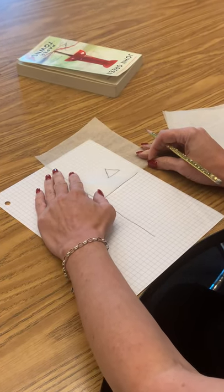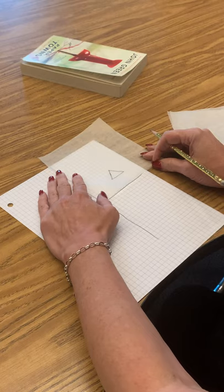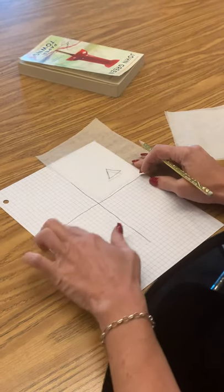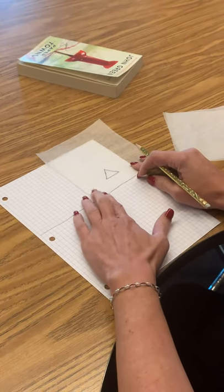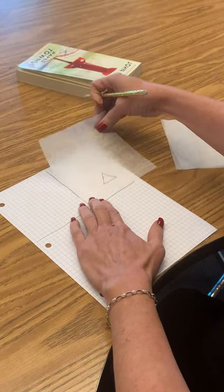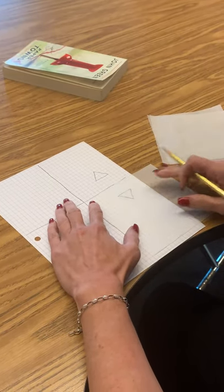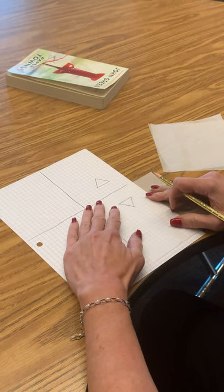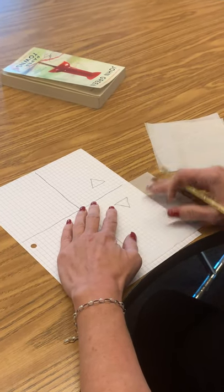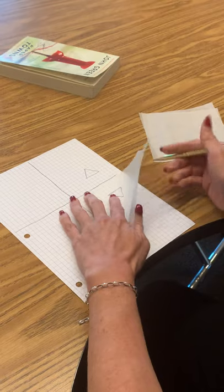Now we're going to do a reflection over the x-axis, which is down here. So what we're going to do is we're going to flip it and line it up to where it's right here on the paper.